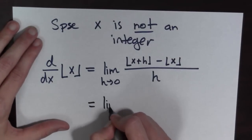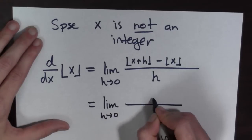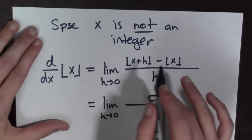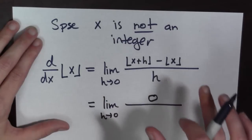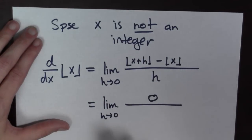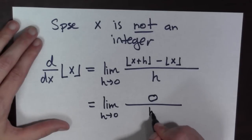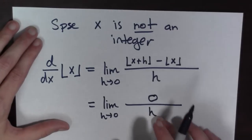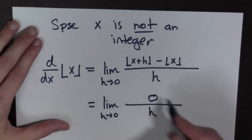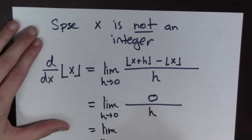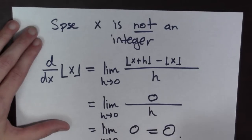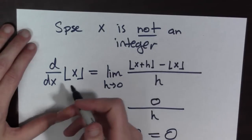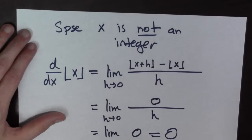So this is going to be the limit as h goes to 0 of 0, because when h gets close to x, the greatest integer less than or equal to x plus h is equal to the greatest integer less than or equal to x, over h. And since we're taking the limit as h goes to 0, we're assuming that h is not equal to 0. So this whole thing is equal to the limit as h goes to 0 of 0, which is just equal to 0. So if x is not an integer, the derivative of the greatest integer function is equal to 0.